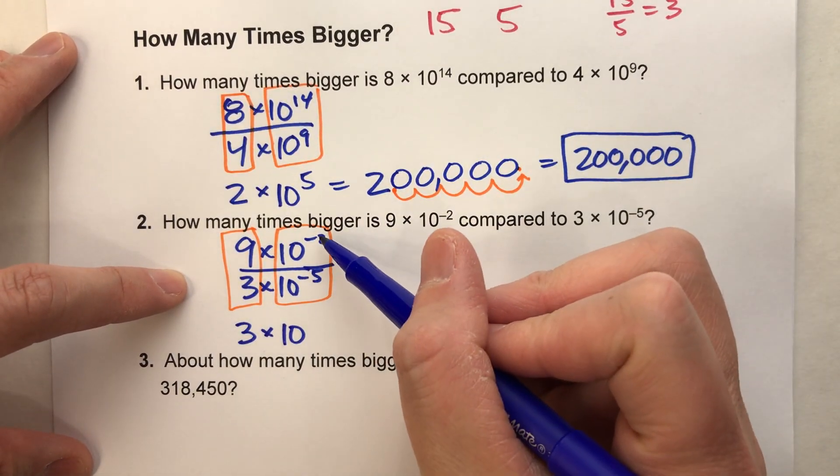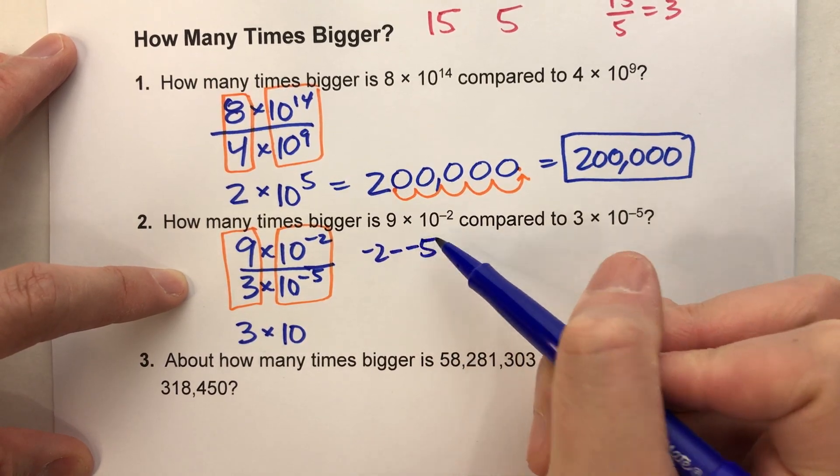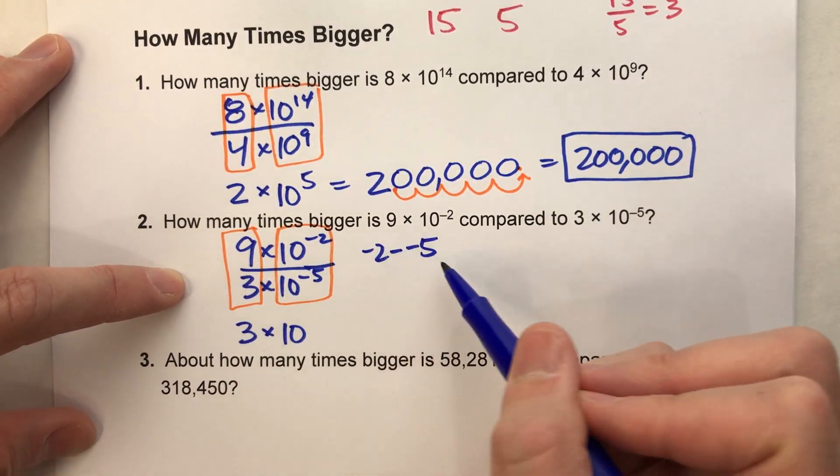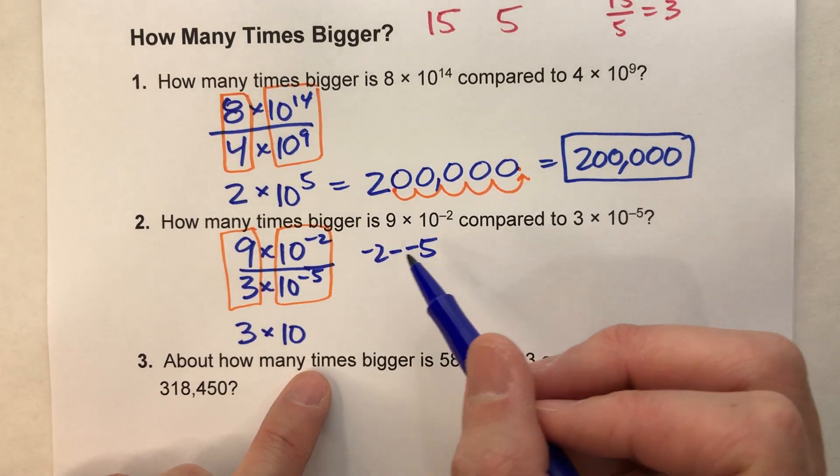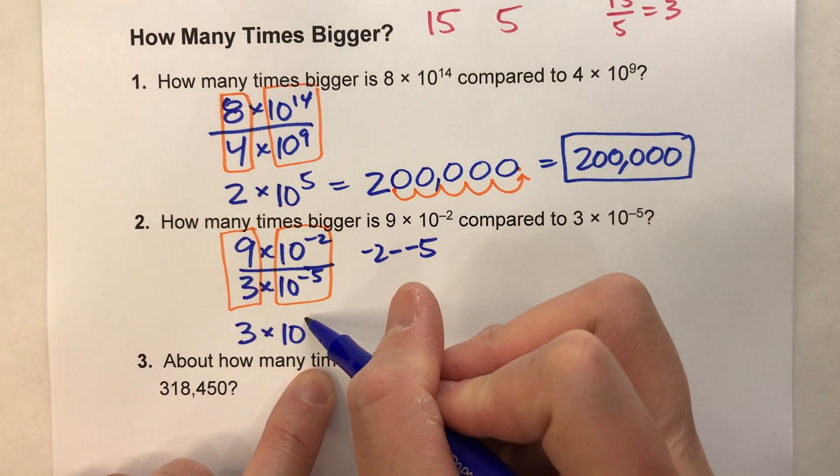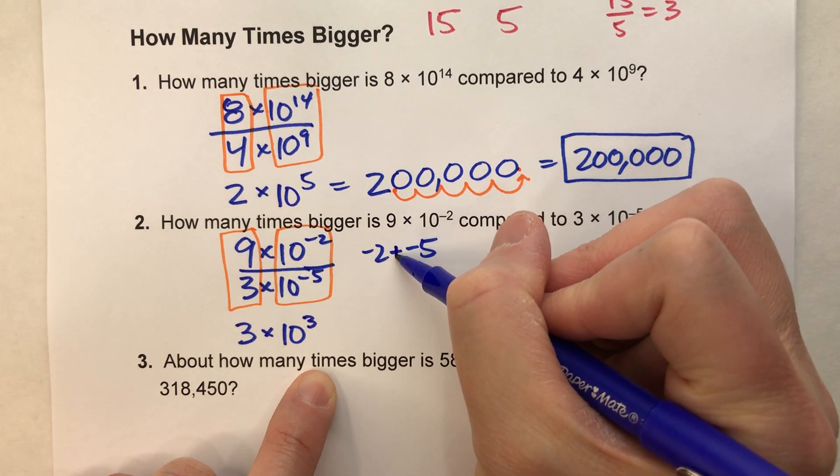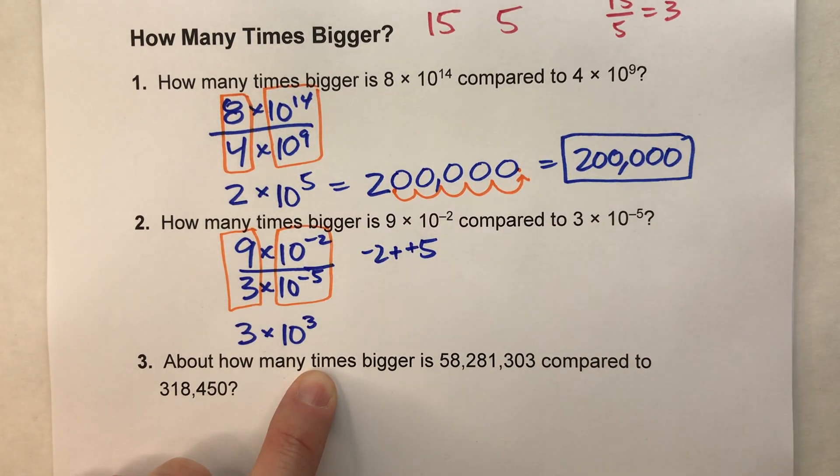Now be careful here. Negative 2 minus negative 5, if you're not careful, you might think that's negative 7, you might think it's negative 3. It's actually positive 3, because when you subtract a negative, it's the same thing as adding a positive.